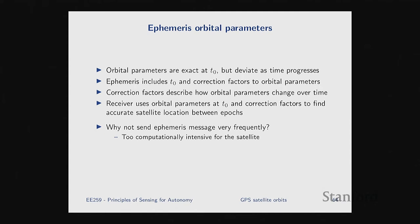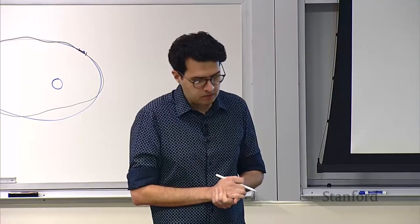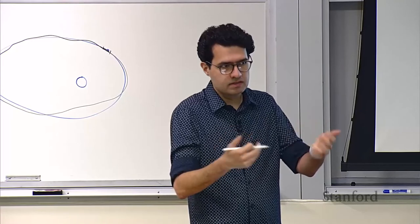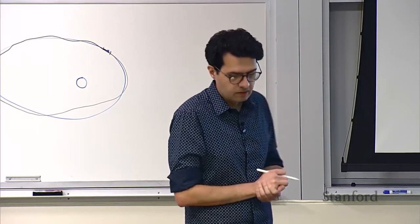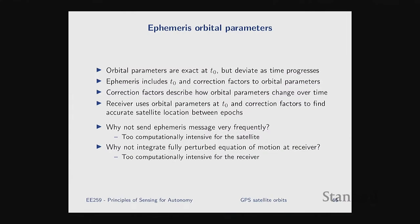Why not send ephemeris messages very frequently to avoid needing correction factors? For a practical reason: it would become too computationally expensive for the satellite to constantly communicate this, and power consumption is always a major constraint for satellites. Why doesn't the receiver just integrate the fully perturbed equation of motion to find the satellite's trajectory? That too is computationally expensive for the receiver. So the design decision was made to describe the trajectory with six orbital parameters plus correction factors, sent at slow intervals.